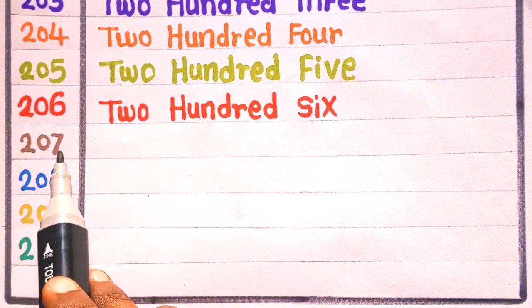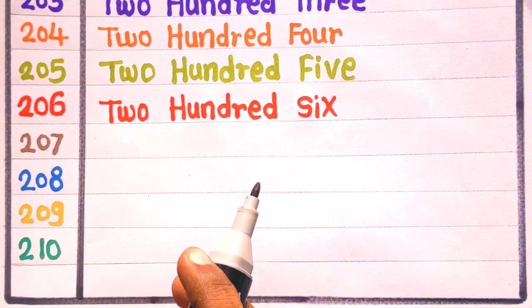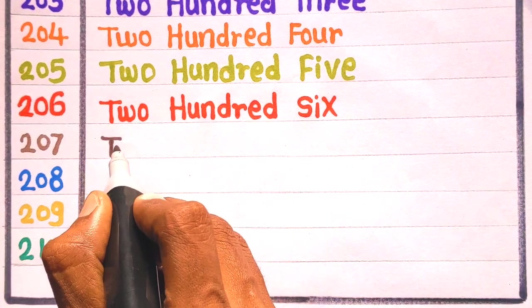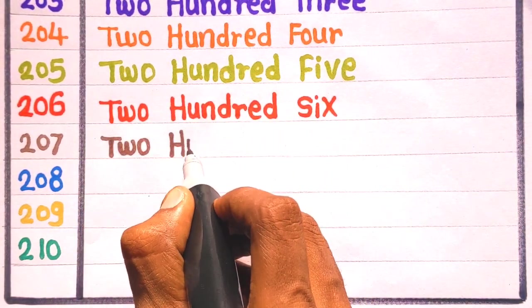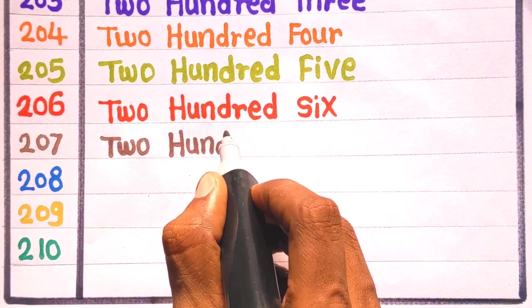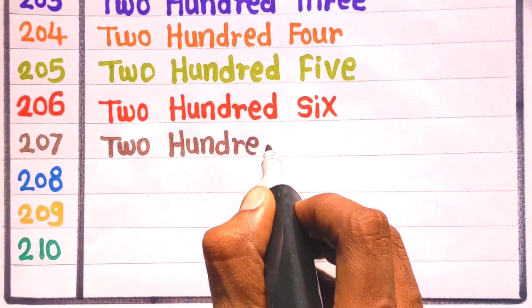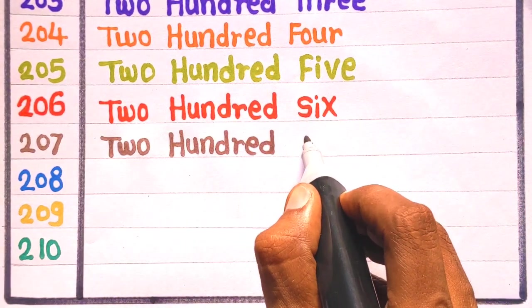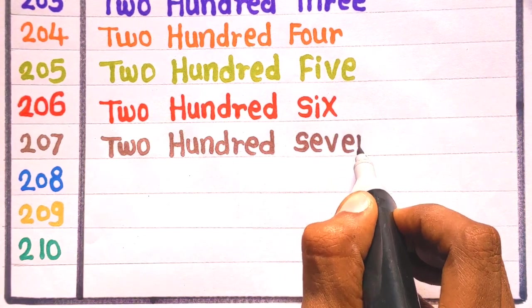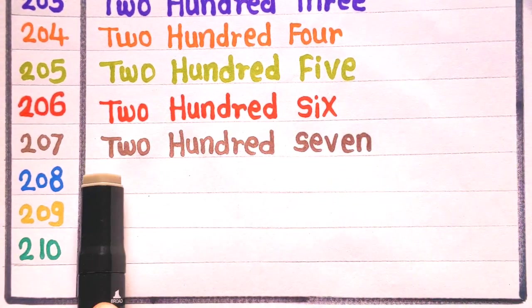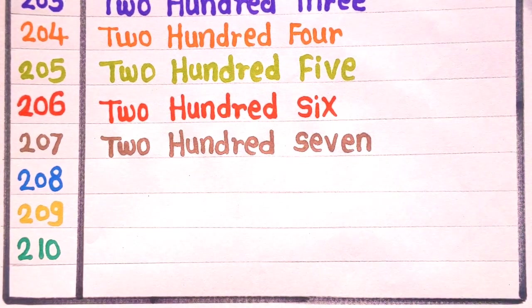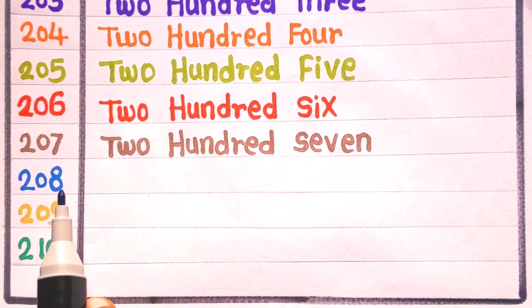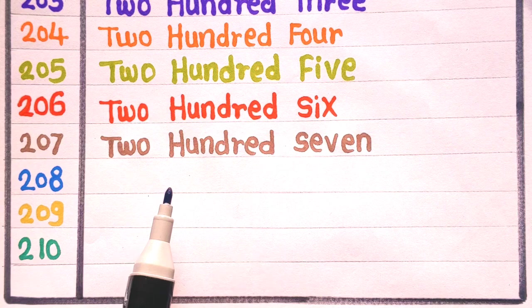Next is 207. E is 207. T, W, O, 2, H, U, N, D, R, E, D, 100, S, E, V, E, N, 7, 207. With the gray color. Next is 208.